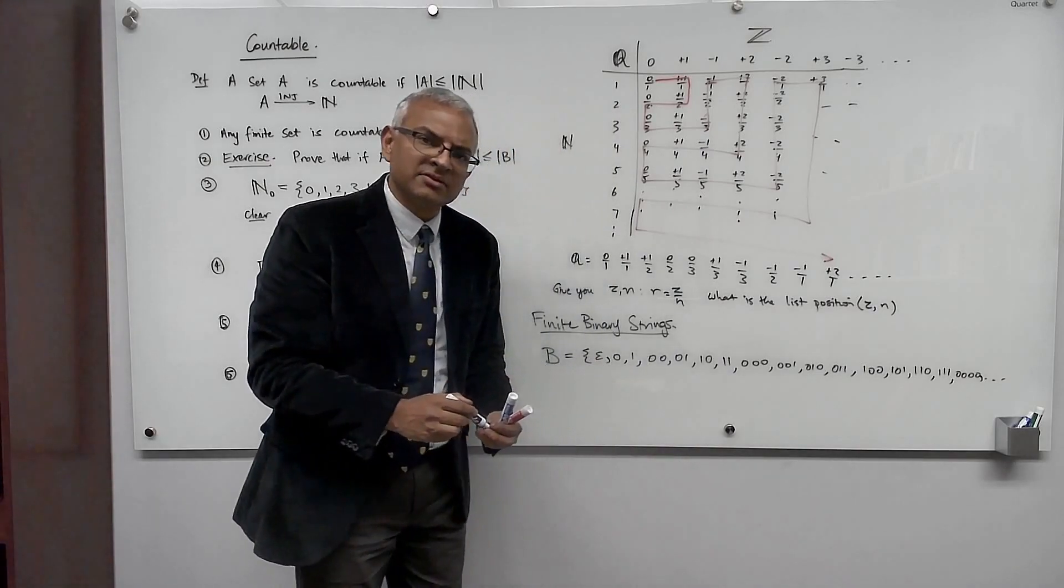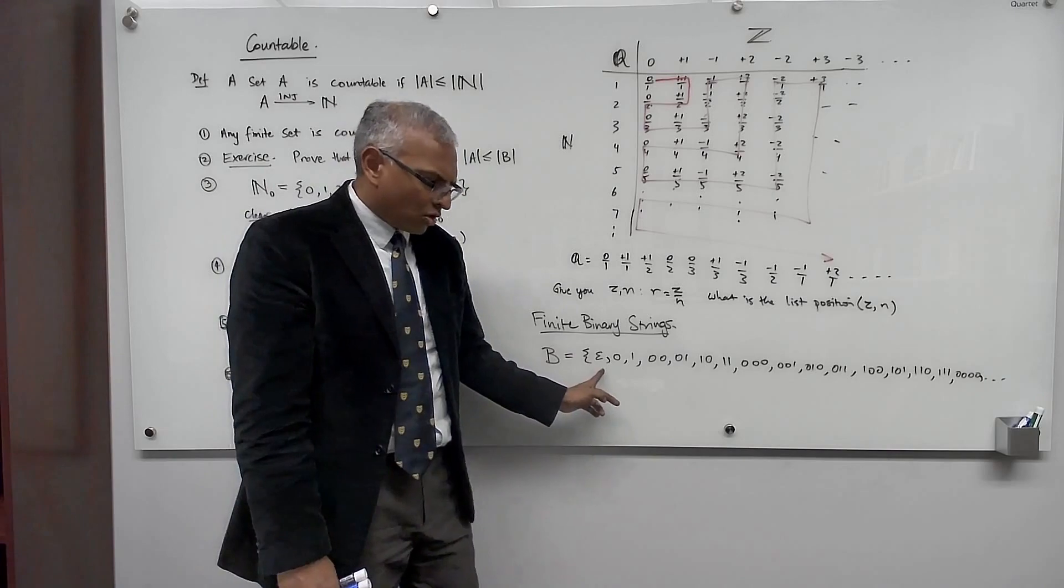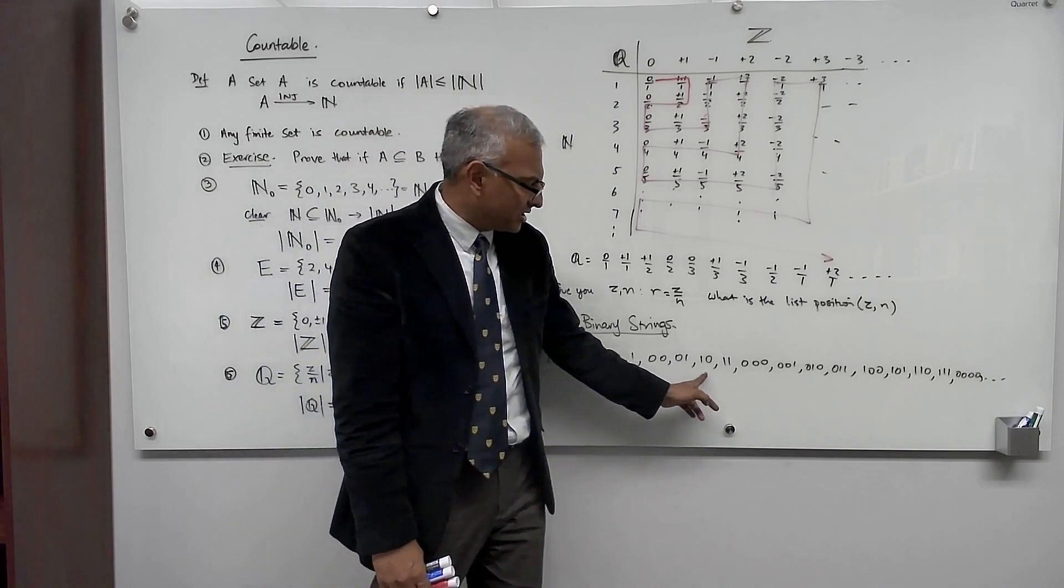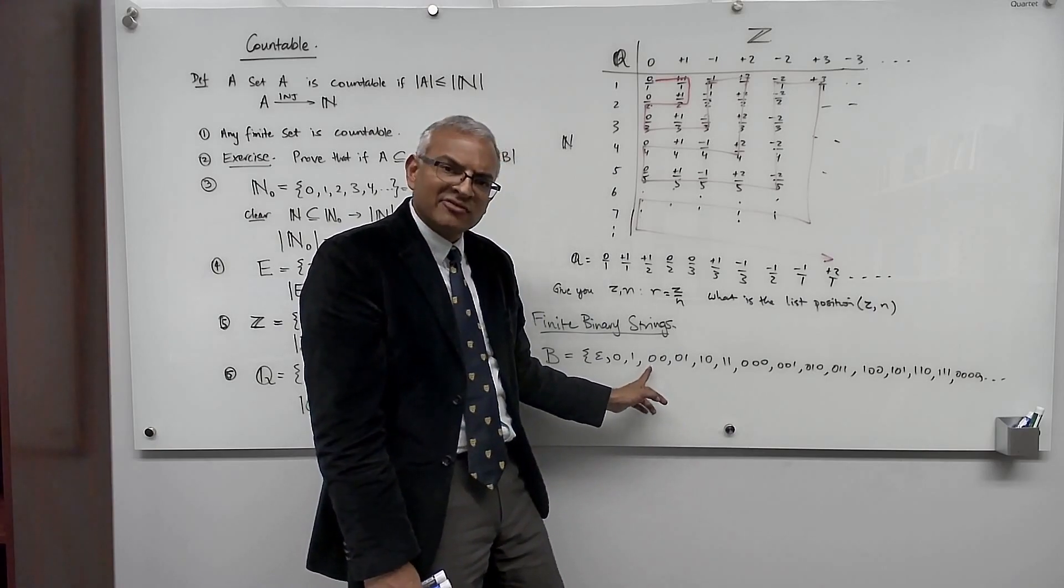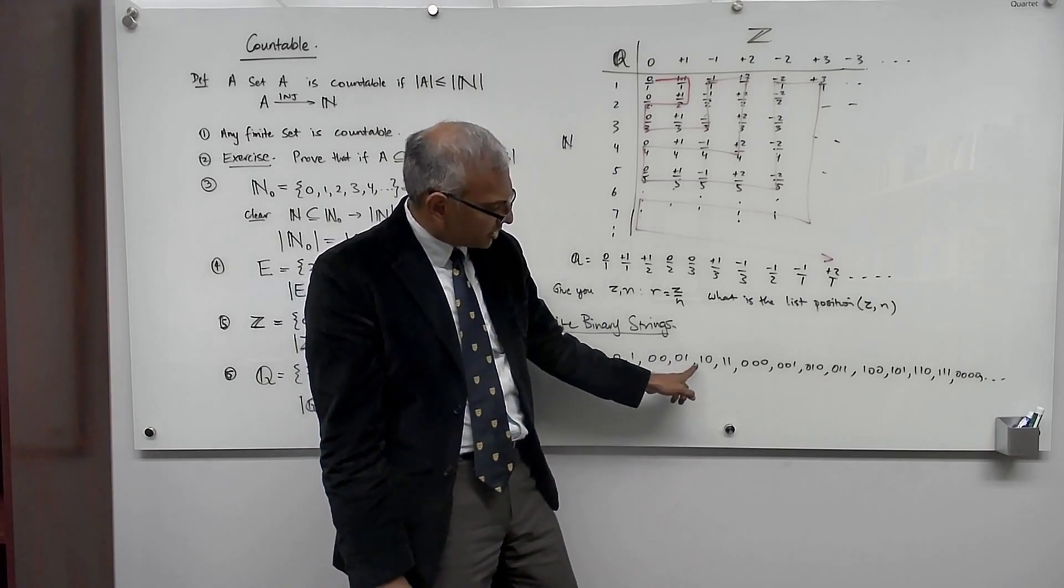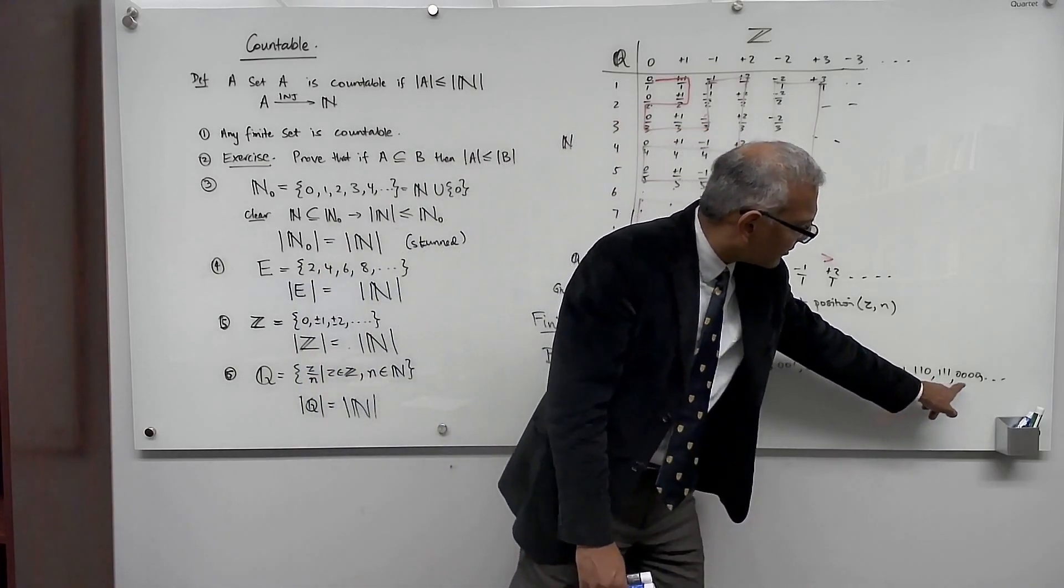I've chosen to list the binary strings, the finite binary strings, in a particular order. So I'm starting with the shortest and then gradually increasing the length, and within a particular length I list them in order of increasing value. So this value is 0 then 1 then 2 then 3. 0, 1, 2, 3, 4, 5, 6, 7, 8.